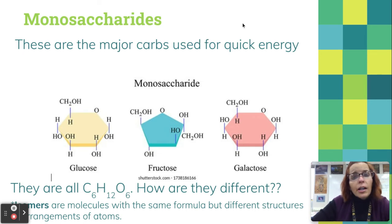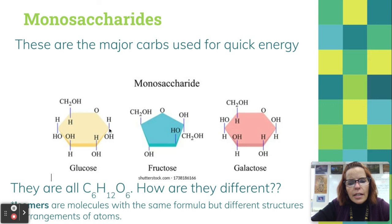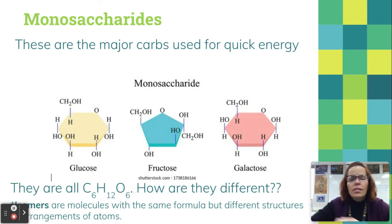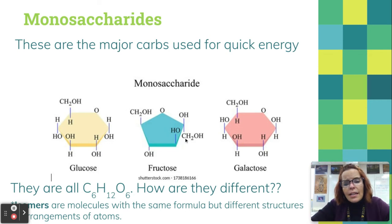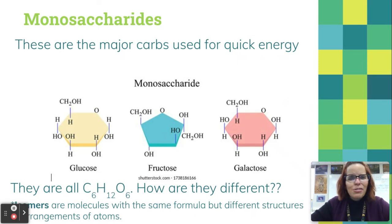Well, if you number the carbons — remember that each vertex without anything written there is a carbon — you can count that glucose has six carbons: one, two, three, four, five, and the sixth carbon up top. If you count all the O's and H's, it's C6H12O6. Now let's look at fructose: carbon one, two, three, four, five, and the sixth carbon — it's also C6H12O6. They just have a different shape, and that makes them have a different flavor, because the shape of a molecule determines what flavor it has. So fructose and glucose don't taste the same.